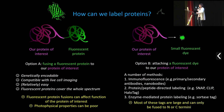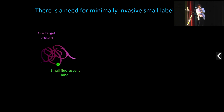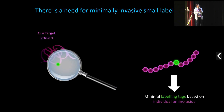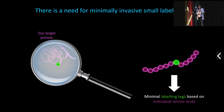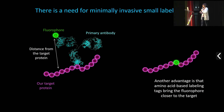As such, these tags can mainly only be fused to the N- or C-termini. That's why there is interest in developing minimally invasive, small labeling tags — basically replacing something large with something as small as it can get. If we look at proteins, these minimal tags are based on the building blocks of proteins, which are individual amino acids. This has the advantage that the probability of affecting the function of your protein of interest is much lower.